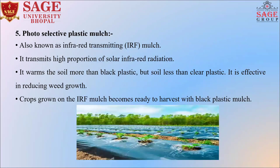The fifth is photo selective plastic mulch, also known as infrared transmitting mulch. It transmits a high proportion of solar infrared radiation. Photo selective plastic mulch warms the soil more than black plastic but less than clear plastic. It is effective in reducing weed growth. Crops grown on infrared transmitting mulch become ready to harvest earlier compared to those grown with black plastic mulch.